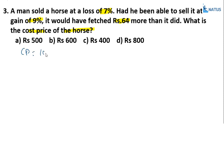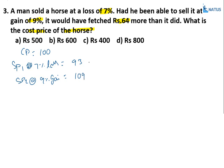Let cost price = 100. SP1 at 7% loss = 93; SP2 at 9% gain = 109. Difference = 109 - 93 = 16. When the difference is 16, cost price is 100. But actual difference is 64, so cost price = (64/16) × 100 = 400 rupees.